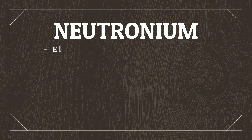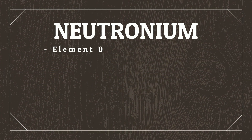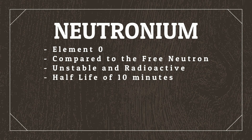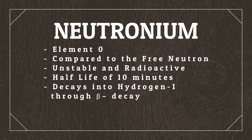Neutronium would be its own chemical element with atomic number zero, compared to its closest real-world isotope, the free neutron. Neutronium is not stable, making it radioactive, with a half-life of 10 minutes, after which time it decays into hydrogen 1 through negative beta decay. Neutronium would be exclusively a gas all the way down to absolute zero, though it could be condensed into a liquid or solid with extreme pressure — pressure only present in stellar objects like neutron stars.